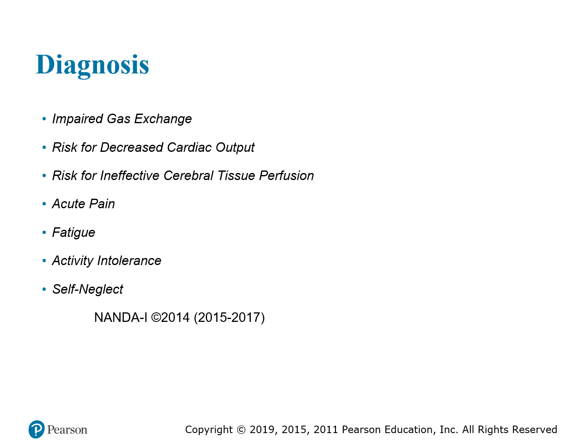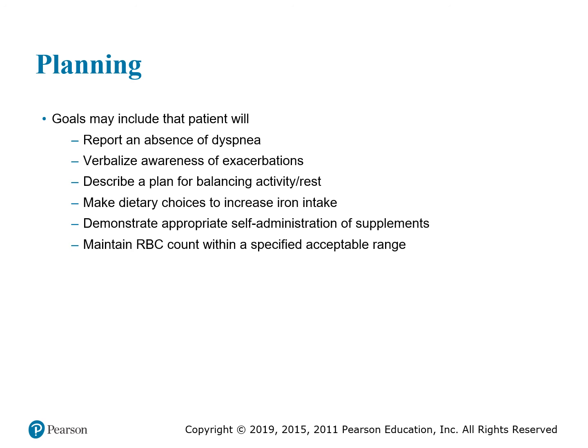Nursing diagnoses listed on page 78 include impaired gas exchange, risk for decreased cardiac output, acute pain, activity intolerance, and fatigue. I would also add risk for falls because of dizziness and weakness. Goals include having the patient report absence of dizziness and verbalize awareness of exacerbations — does the patient know when their anemia is worsening? We need to educate them.